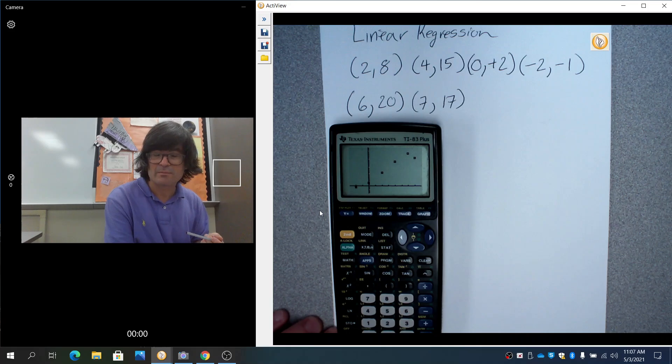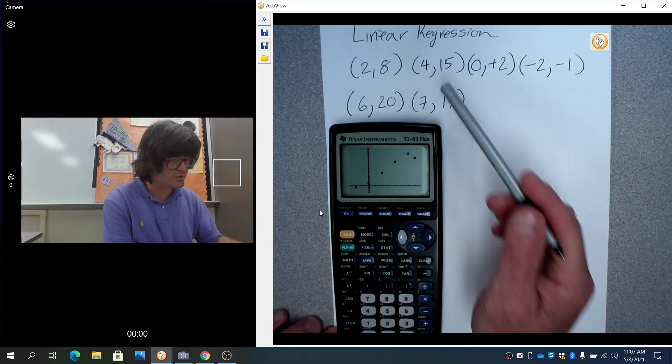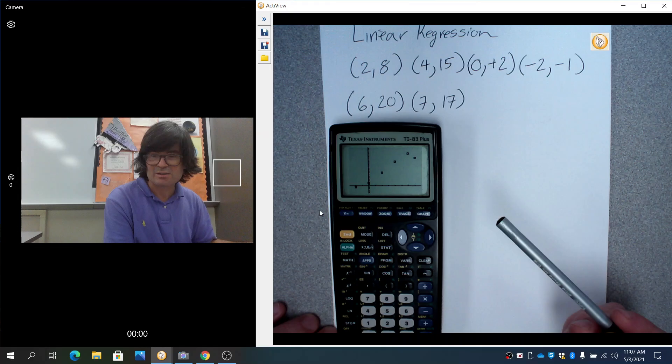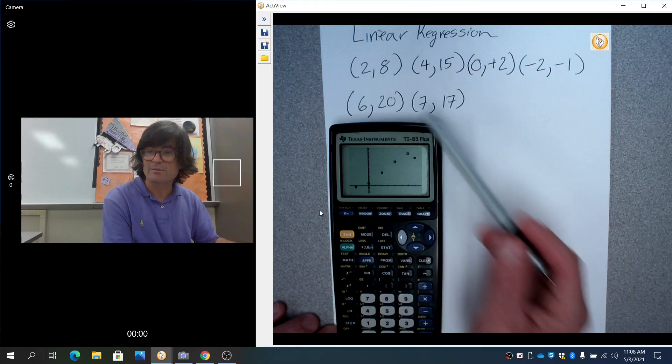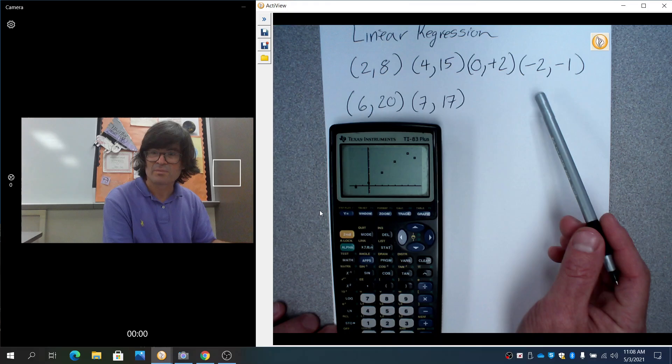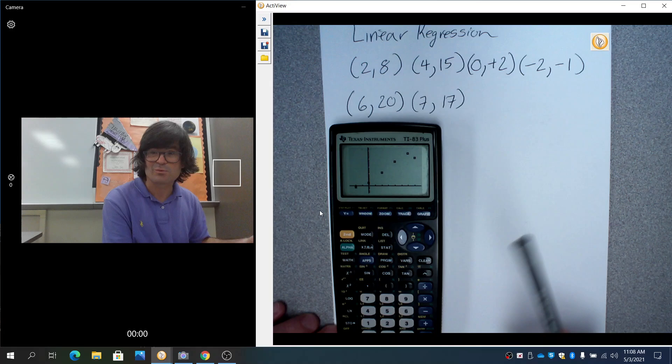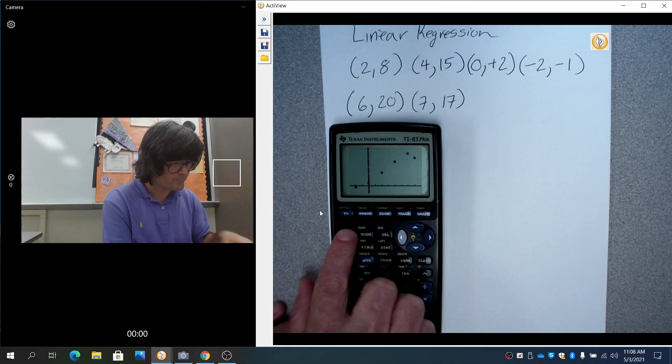And it's going to be the calculator's way at attempting to guess what the y should be based on knowing the x. The linear regression model, the goal of it is that if you are given an x - like say x was a number not in this list, say x was 3 - if someone said 'hey what's y when x is 3?' Well right now I don't know because it's not one of my points, but if you plug it into your linear regression model, that will provide a guess of what it thinks y should be if x was 3.